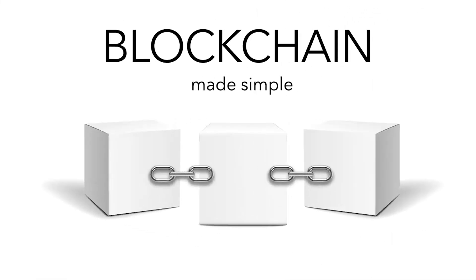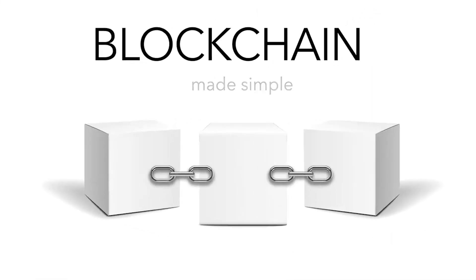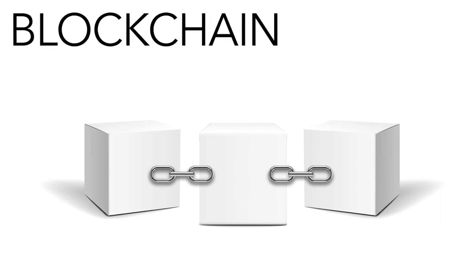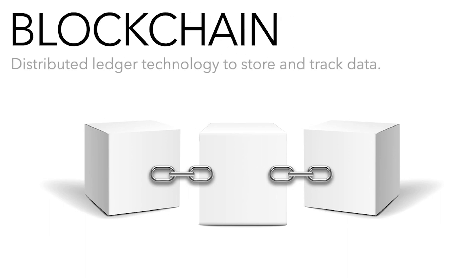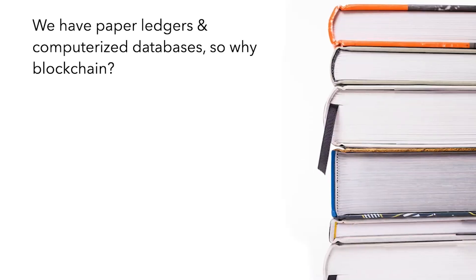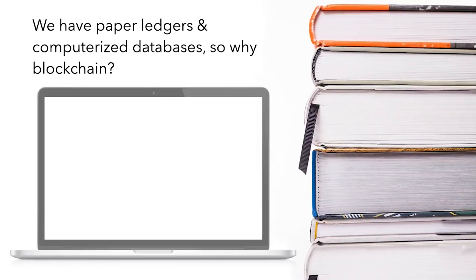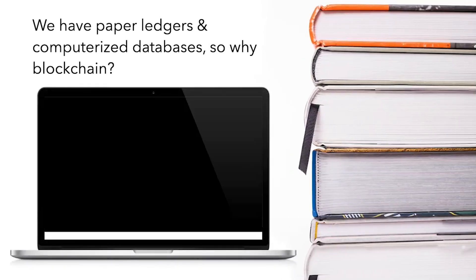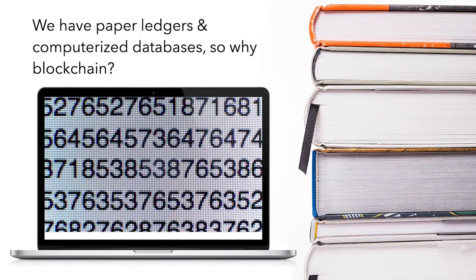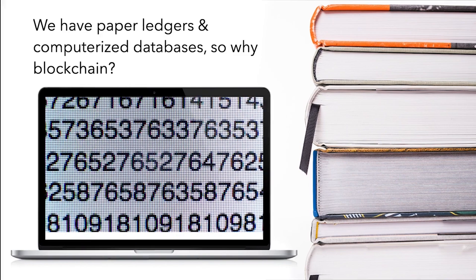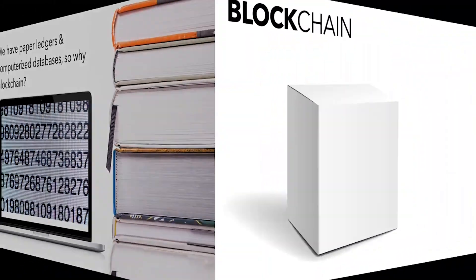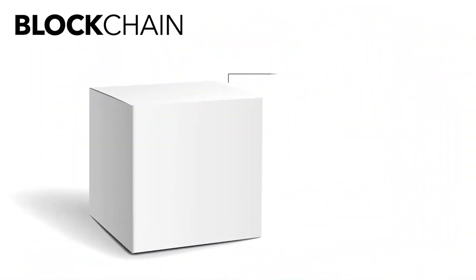Blockchain made simple. Blockchain is simply a distributed ledger technology to store and track data. But we have paper ledgers and computerized databases, so why blockchain? Let's look at the basics, starting with the block. Each block stores three key pieces of information.